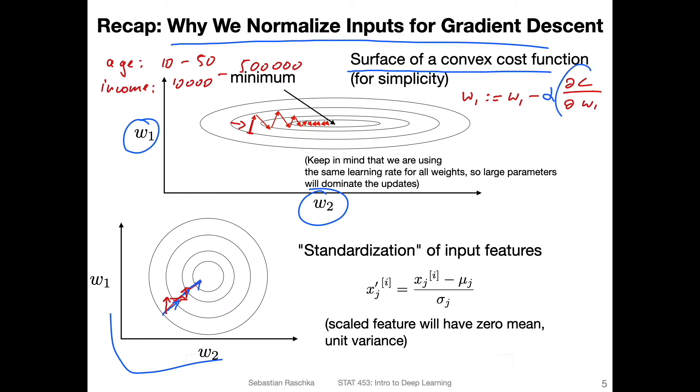So in this part, this computation involves usually x, the input itself. For example, it could be y hat minus y times, let's say x, x_1 is the input feature. So here, the input feature kind of scales the whole thing.